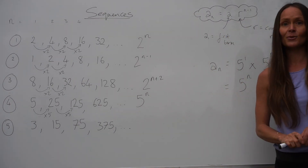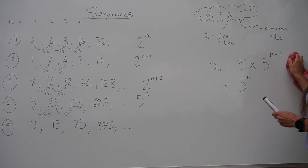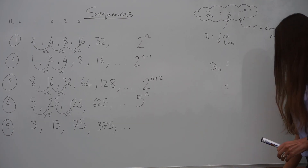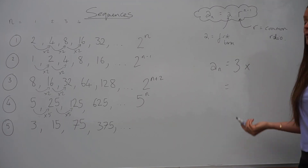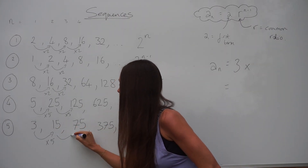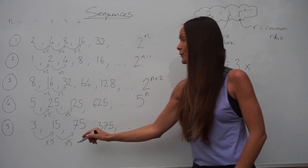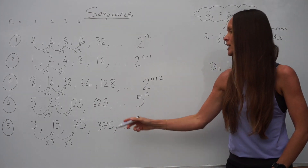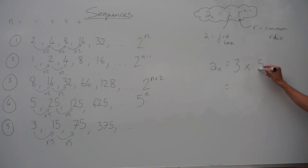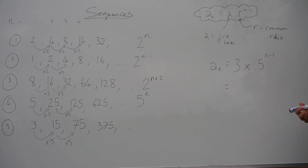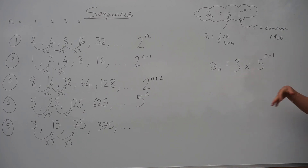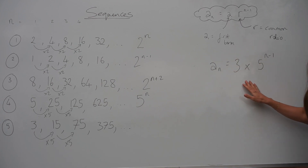Now let's look at the last question, number 5. This time the first term is positive 3, so you write that down first. Then the common ratio — it looks like we're multiplying by 5 again: 3 times 5 is 15, 15 times 5 is 75, and so on. So the common ratio is 5, giving 3 multiplied by 5 to the power of n minus 1. We can't simplify this one because we can't rewrite the number 3 as 5 to the power of something. So that is the final answer.